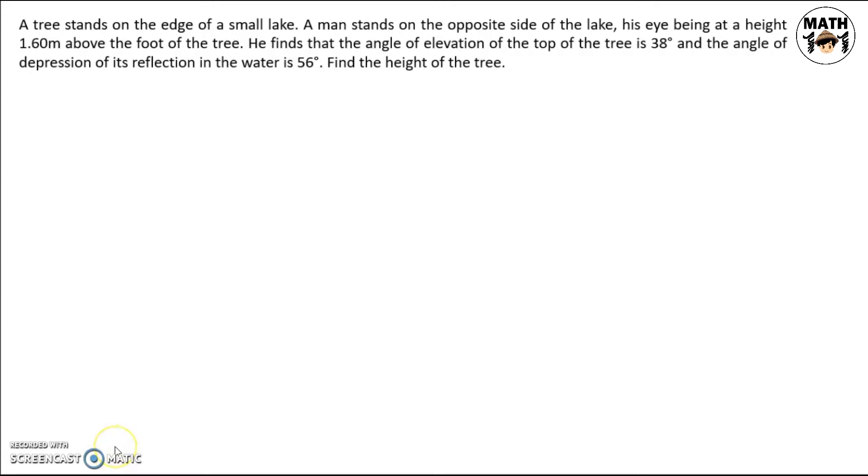A tree stands on the edge of a small lake. A man stands on the opposite side of the lake, his eye being at a height 1.6 meters above the foot of the tree. He finds that the angle of elevation of the top of the tree is 38 degrees and the angle of depression of its reflection in the water is 56 degrees. Find the height of the tree.